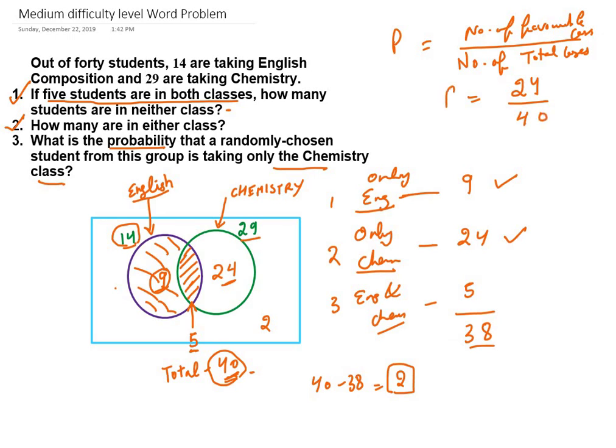So the probability will come out to be 24 by 40. These are the chances when we randomly select a student and they are taking Chemistry class. We will simplify it: 24/40 to 12/20 to 6/10 to 3/5. So the answer to the third problem is 3/5, which is the probability required.